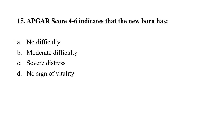Question number 15: APGAR score of 4 to 6 indicates that the newborn has — option A: no difficulty; option B: moderate difficulty; option C: severe distress; option D: no signs of vitality. The correct option is B, that is moderate difficulty.